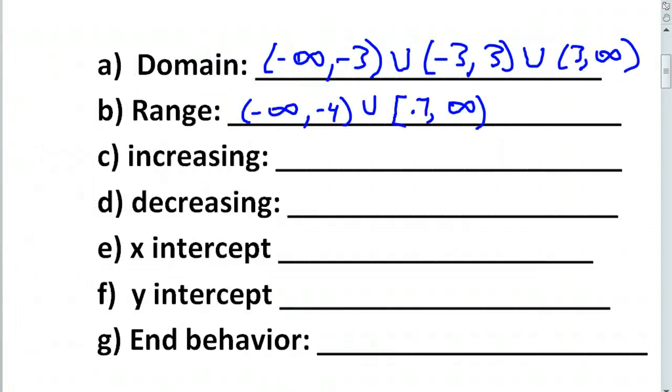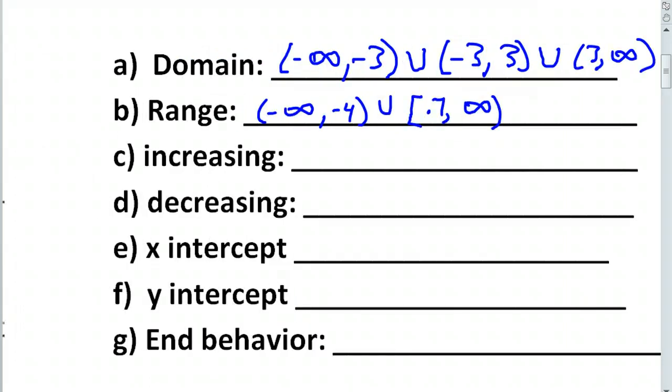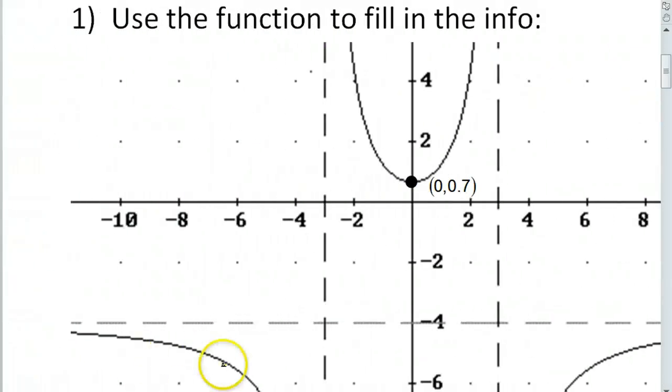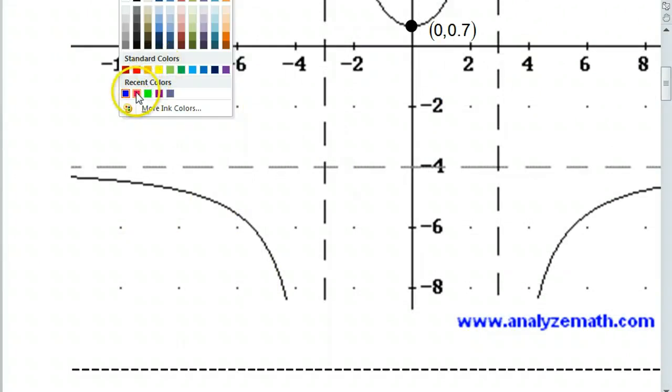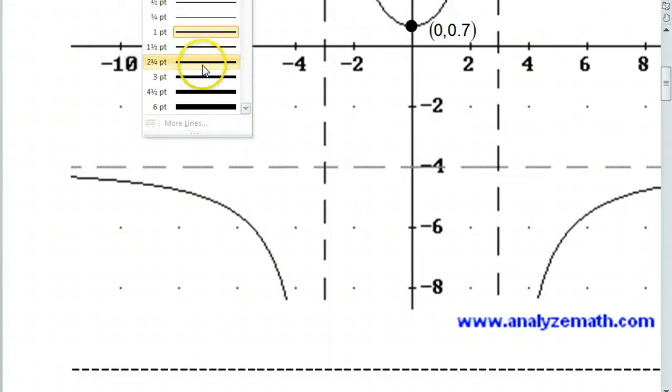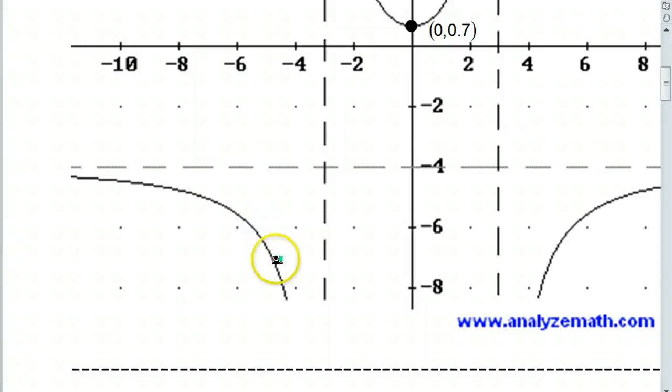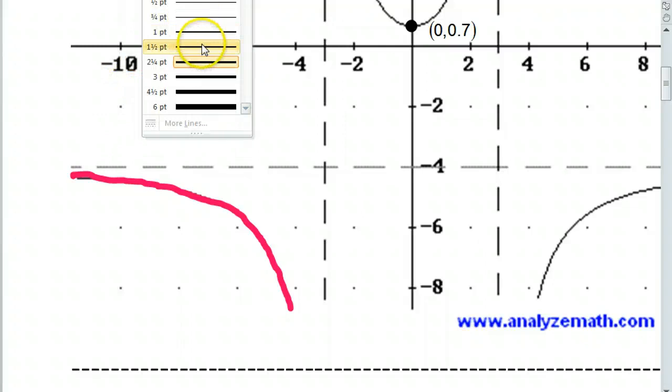Okay. Now, increasing and decreasing intervals. Remember, these are strictly x values. Everything I'm about to do is an x value. So, I'm just going to go from left to right. So, from left to right, we're starting off with a decreasing interval. Because from left to right, this is going down, down, down, down, down. Okay. Now, I want x values, though. So, what is, give me a second.